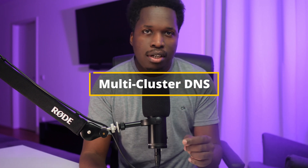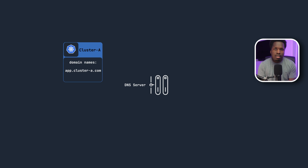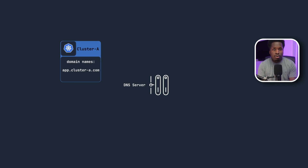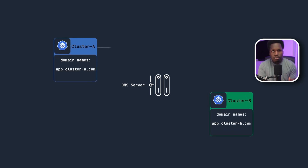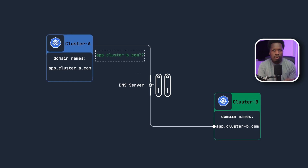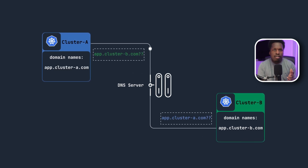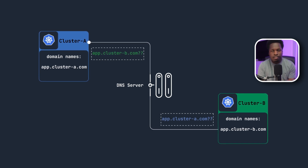That is multi-cluster DNS. As you may have gleaned from the name itself, multi-cluster DNS is nothing more than having a consistent DNS service running across two or more Kubernetes clusters. This means that if you have two clusters, for example, you should be able to seamlessly resolve domain names of a second cluster from the first cluster, and vice versa.